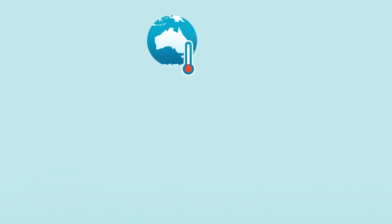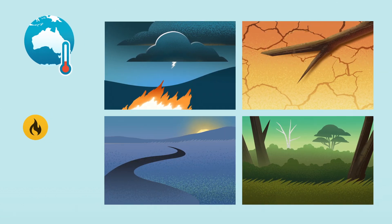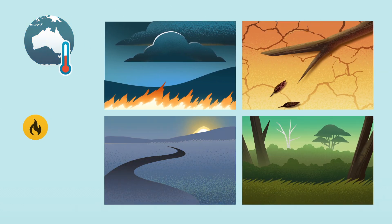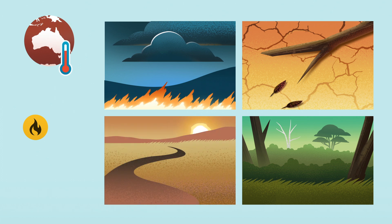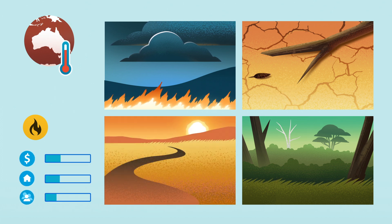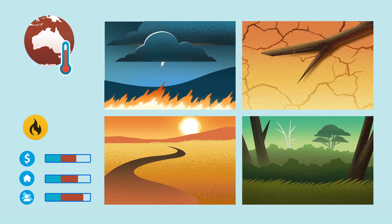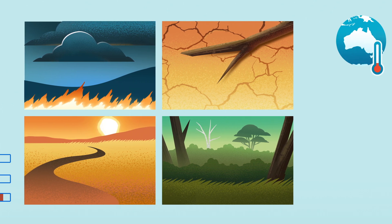Fire danger is influenced by fuel availability, dryness, ignition source and weather, and all of these are influenced by climate change. We can now accurately model the increased likelihood and severity of bushfire weather due to climate change.